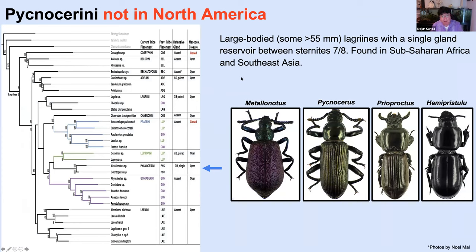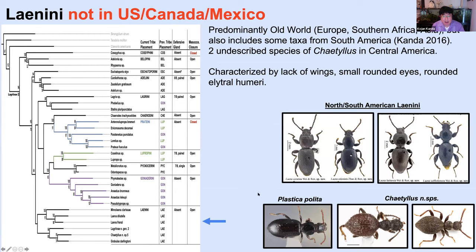There are a couple of remaining tribes from global diversity. The Pycnocerini are large-bodied beetles very diverse in sub-Saharan Africa in tropical regions, with a few species also making it into Southeast Asia. This is the tribe that has a single gland reservoir between sternites seven and eight, and some have very cerambycid-form bodies. Finally, the Laenini doesn't occur in the US and Canada and is not currently known from North America in the published literature. It's a predominantly Old World tribe characterized by lacking wings and having really small rounded eyes. They're currently known from South America — here's Plastica polida from South America — but there are also a couple of undescribed species in the genus Ketilos that make it into Panama as well.